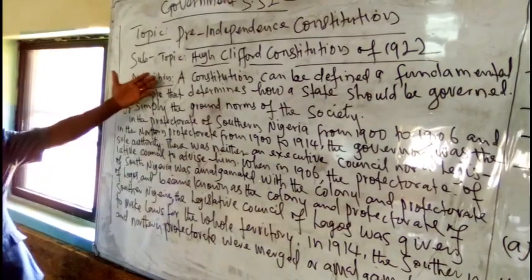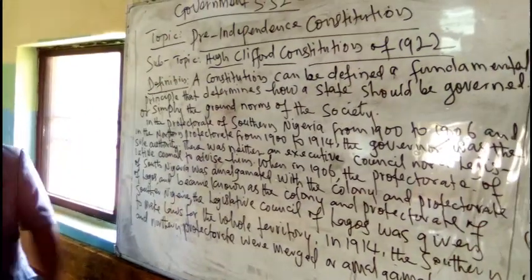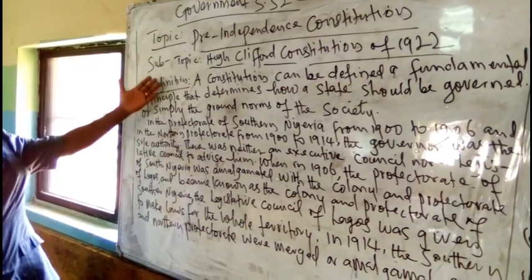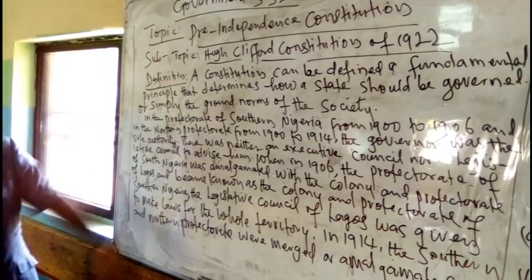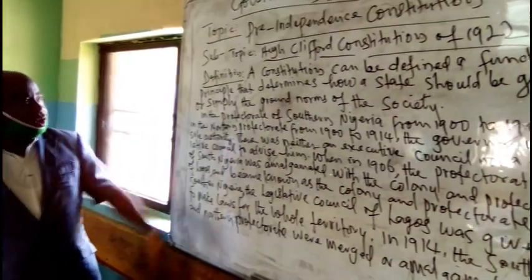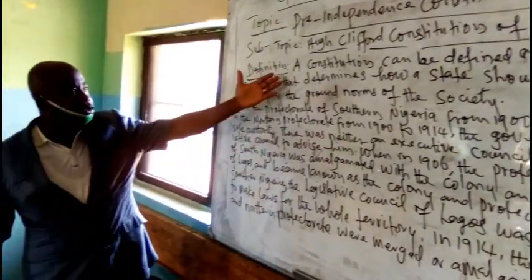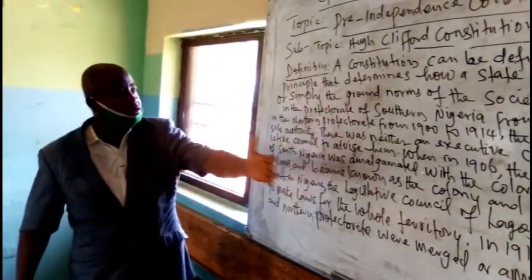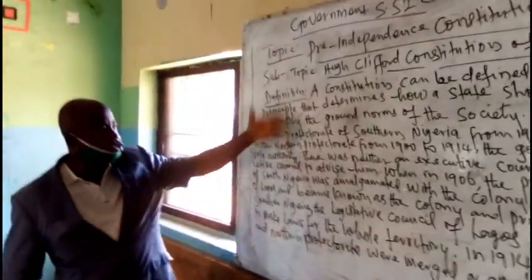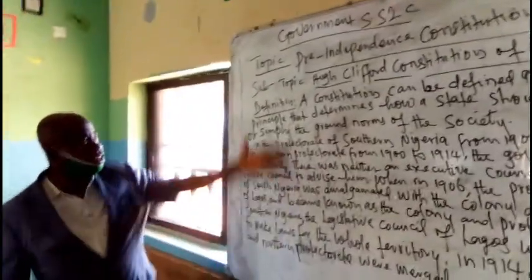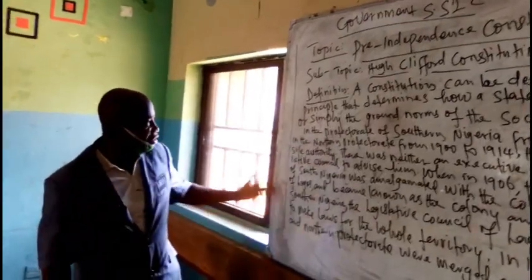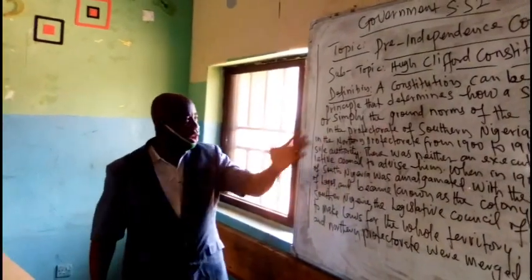This is to remind you of SS1 work — we have done this before. From week one to week four, we are talking about constitution, so there is a need for us to know the definition of constitution once again. In the protectorate of Southern Nigeria from 1900, the colonial master came to Nigeria and Africa as a whole.